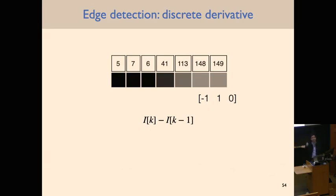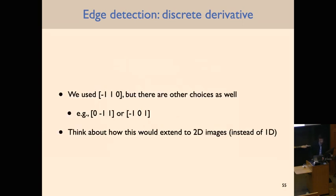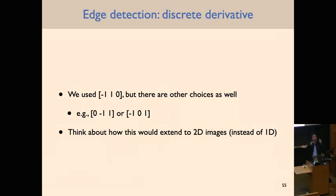We can also pick other kernel values. For example, [0, 1, 0] just replaces each pixel with itself — doing nothing. This sliding dot-product rule is a convolution, and the vector is called a kernel. This idea extends to 2D images: instead of a 1-by-3 vector you have a 3-by-3 matrix, sliding it over the 2D image and taking dot products. In 2D, you'd want to detect edges at different orientations, and you can set up multiple kernels corresponding to differences along different directions.